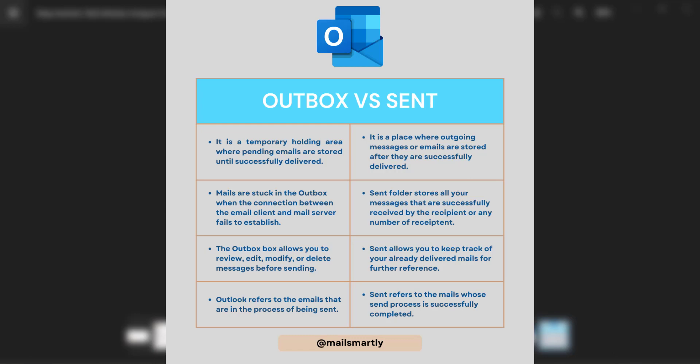The second difference: mails get stuck in the outbox when the connection between the email client and the mail server fails to establish. Sometimes when you create an email, due to internet connection or mail server problems, that email is unable to send to your recipient — in that case it will be automatically saved in your outbox. The sent folder stores all messages that are successfully received by a recipient or any number of recipients, and is designed to save a copy of mail you have sent.